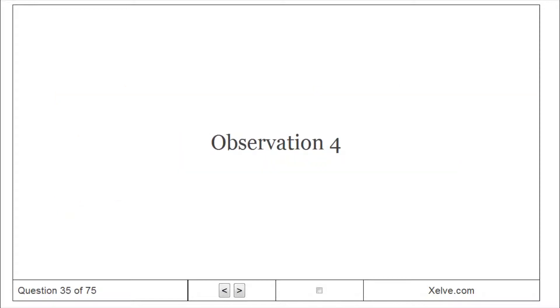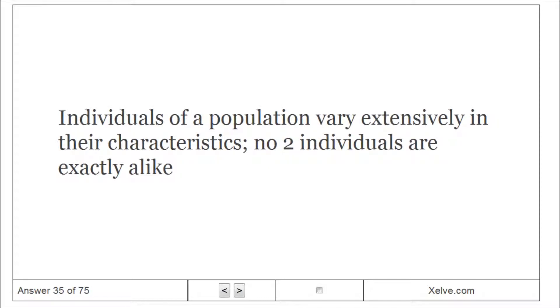Observation 4: Individuals of a population vary extensively in their characteristics. No two individuals are exactly alike.